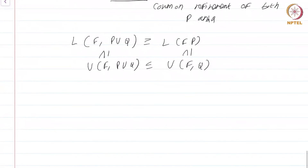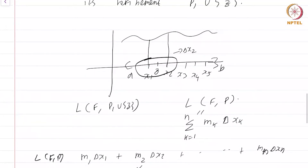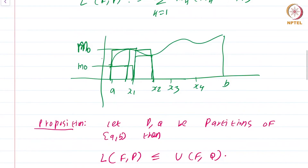As you keep adding more and more points, going back to the original picture, the small rectangles enclosed within the area under the graph become larger and larger, whereas the rectangles on the outside become smaller and smaller. This mimics what was there in the final axiom of the axiomatic characterization of area, so you expect that when you add more and more points these approximations get better and better.